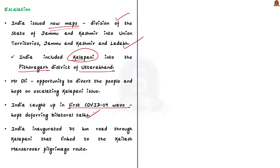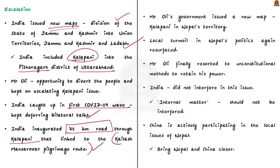In May 2020, India inaugurated a 75-kilometer road through Kalapani linking to the Kailash-Mansarovar pilgrimage route, which escalated the issue further. Mr. Oli's government issued a new map for Nepal which included Kalapani in Nepal's territory. This move almost halted the India-Nepal relationship. The diversion tactic did not help Mr. Oli for long, as local political turmoil in Nepal resurfaced again, and Mr. Oli finally resorted to unconstitutional methods to retain his power.